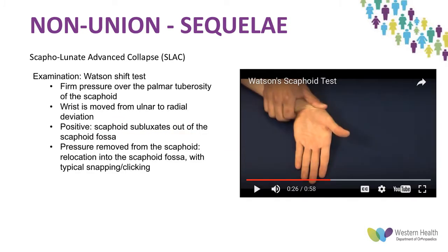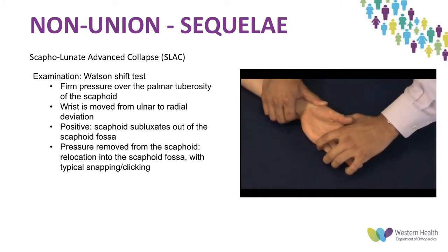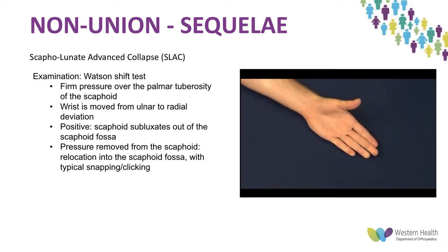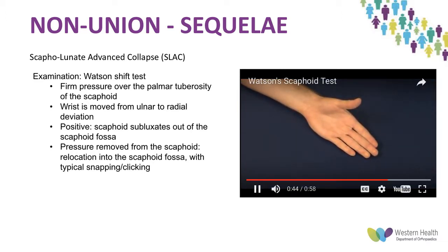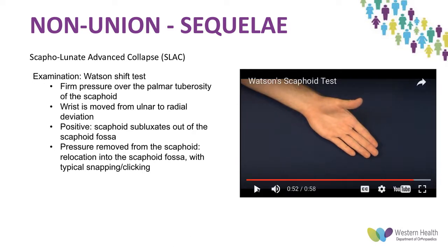The Watson scaphoid test involves applying force on the scaphoid while repositioning the patient's hand into radial deviation with slight wrist flexion, then releasing the force. A positive test — pain with subluxation of the scaphoid out of the scaphoid fossa — proves that the scapholunate joint is unstable.